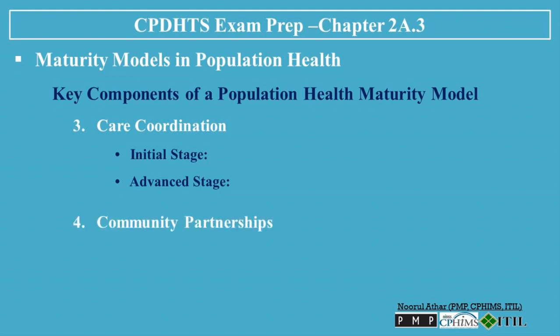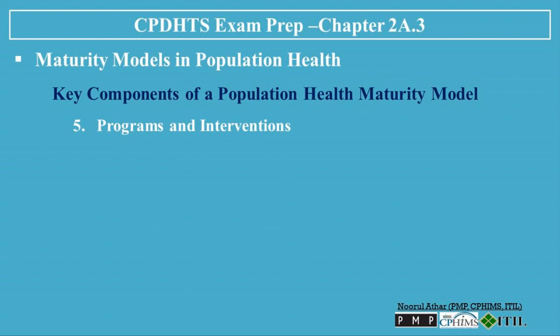4. Community Partnerships: Initial stage — few or no partnerships with community organizations that could address social determinants of health (SDOH). Advanced stage — strong collaborations with a network of community resources to address a wide range of social determinants affecting patient health. 5. Programs and Interventions: Initial stage — programs are generic, with limited customization based on specific population needs. Advanced stage — targeted interventions designed based on detailed population data and evidence-based practices, with continuous monitoring and adaptation.